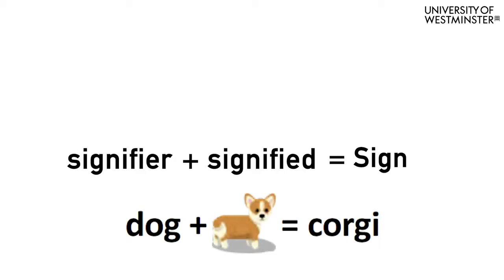So a signifier can be a word. If I said D-O-G, then what is signified in your mind is what you would see, which is an animal with four legs and a tail. The sign would be what you associate with a dog — it could be a specific type of dog, such as a poodle or a Labrador. So together, signifier plus signified equals sign: the word dog, D-O-G, plus the image that you get in your head — in this case, it's a corgi.